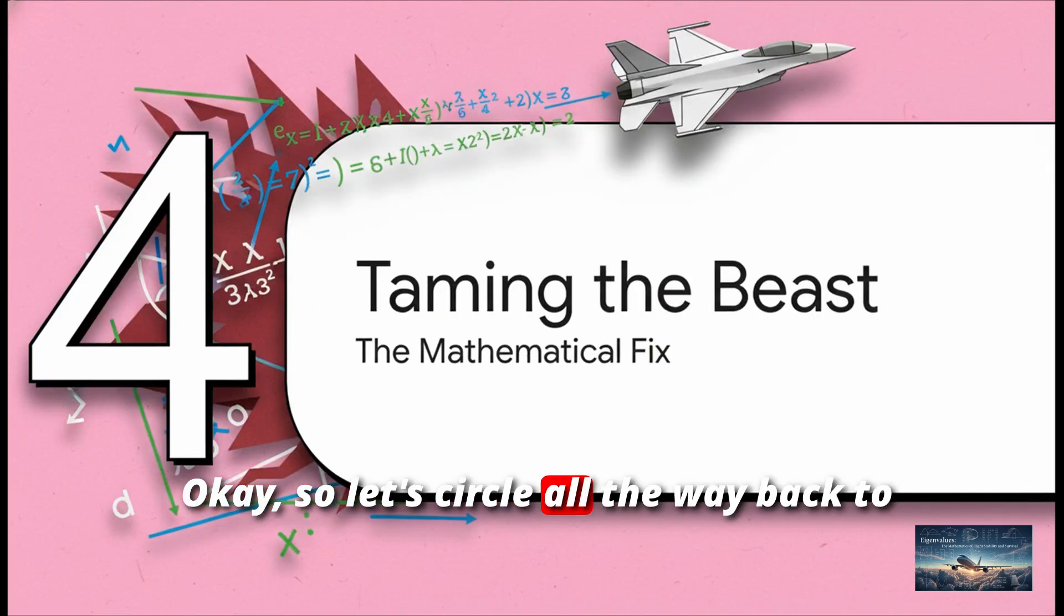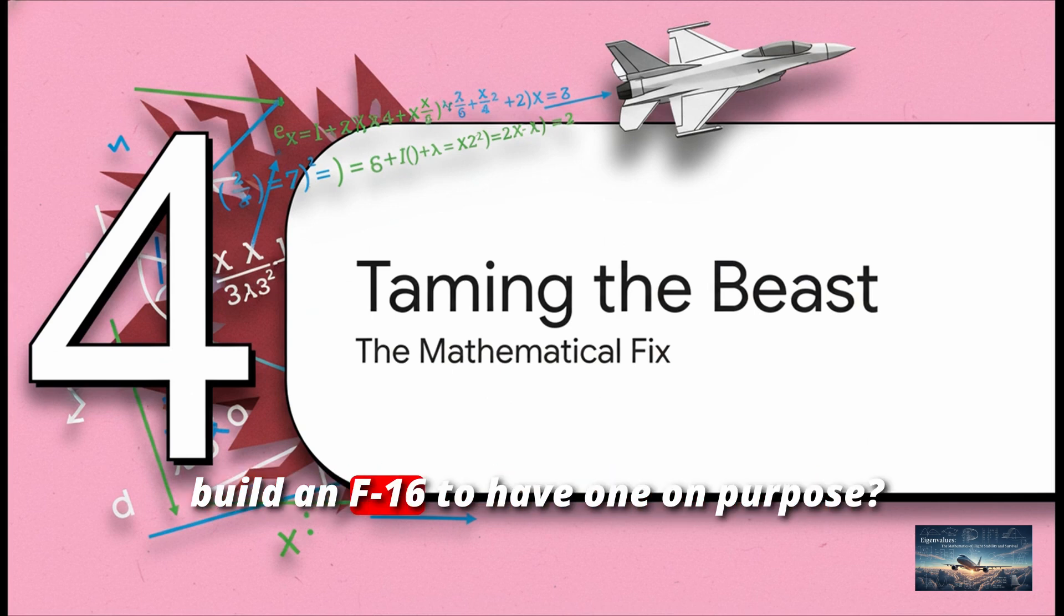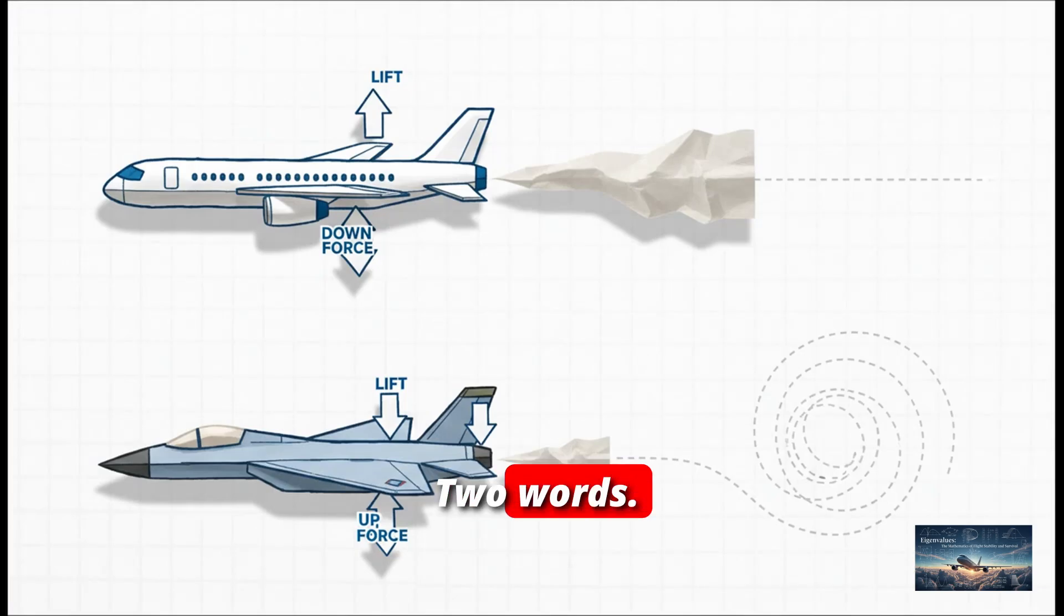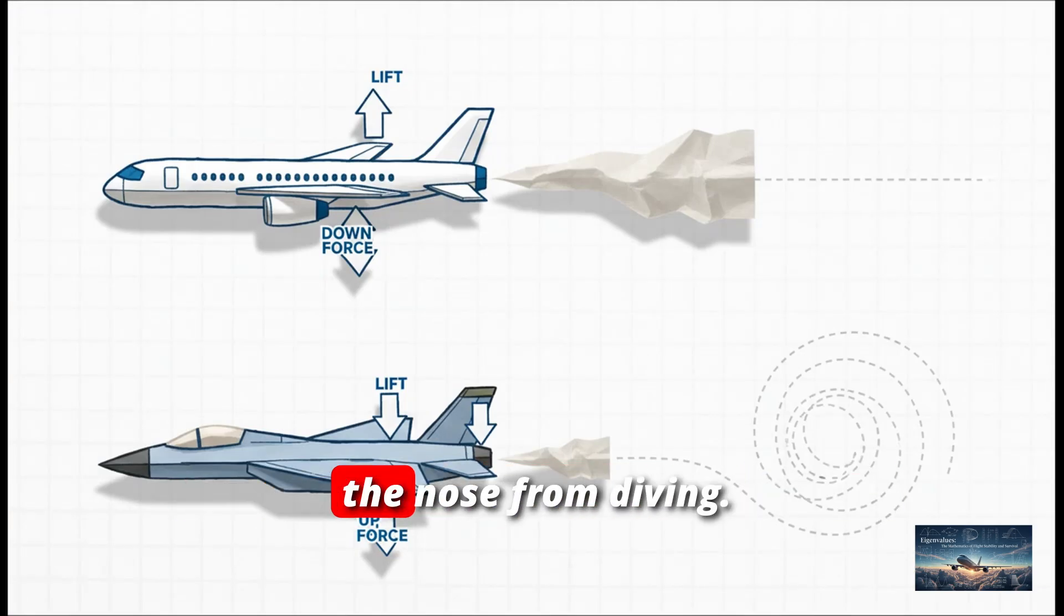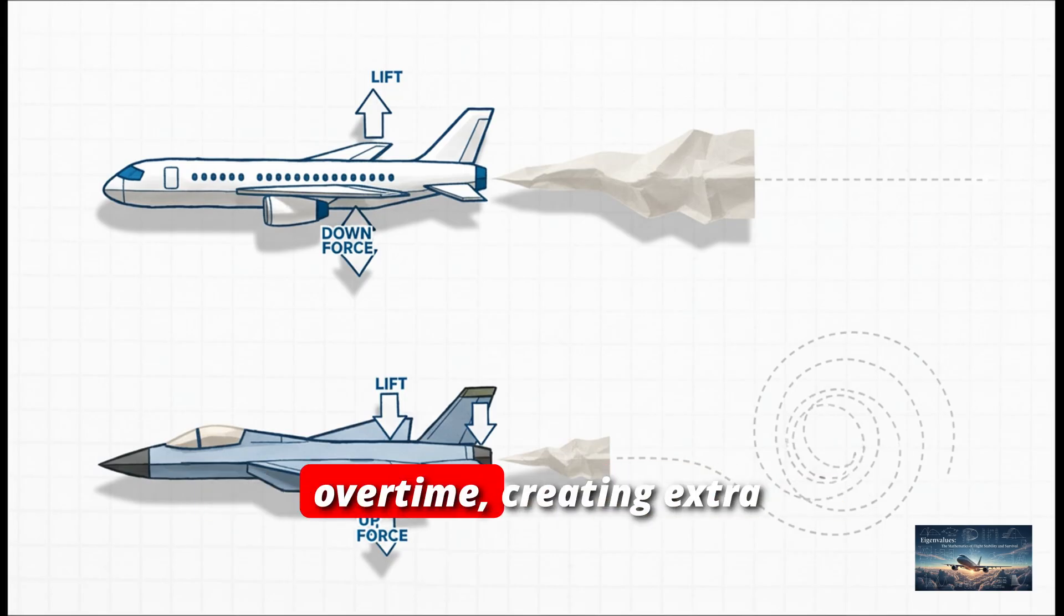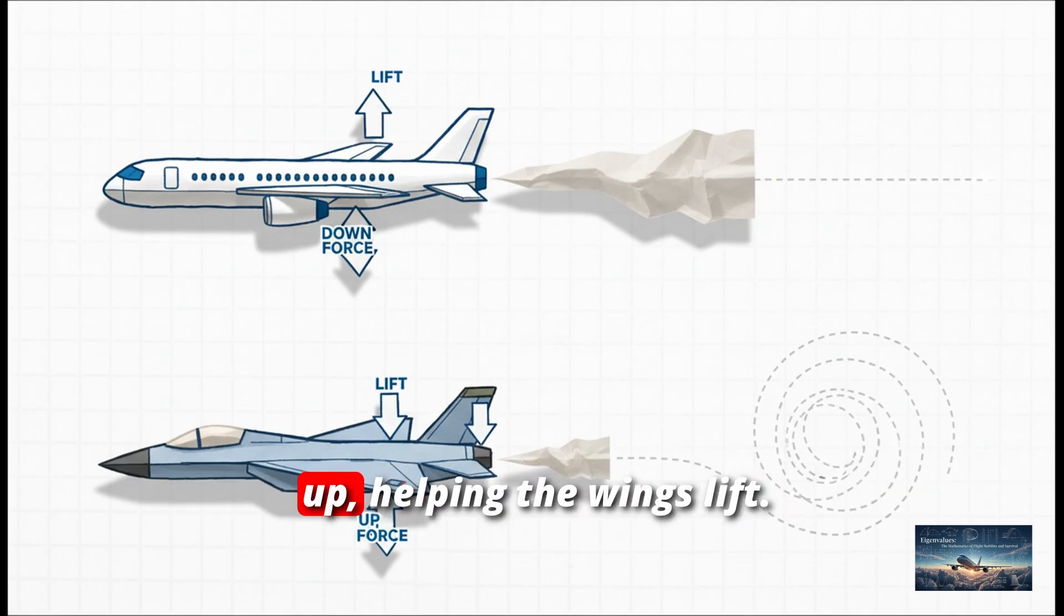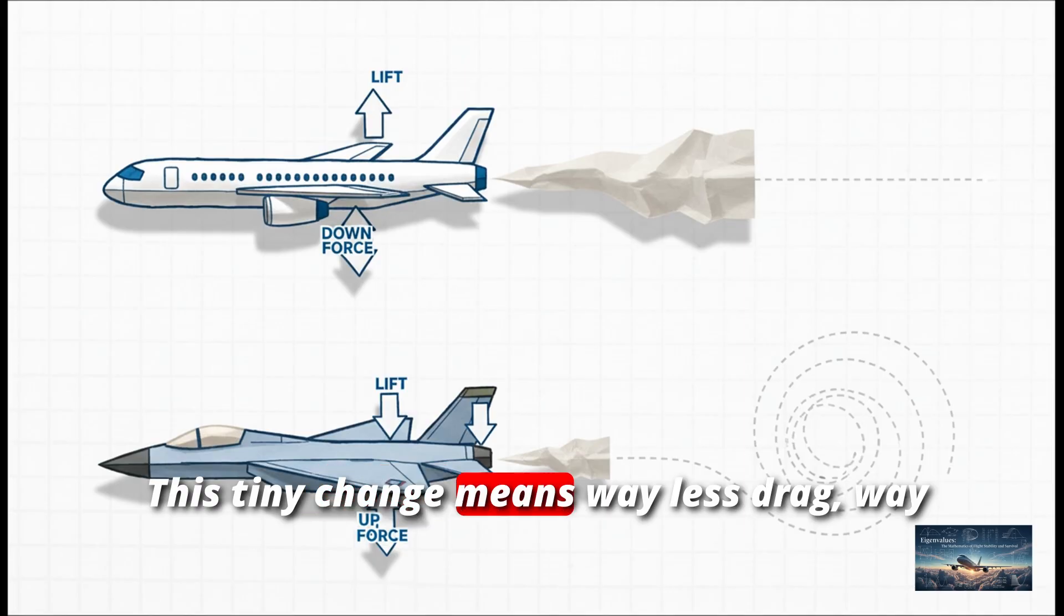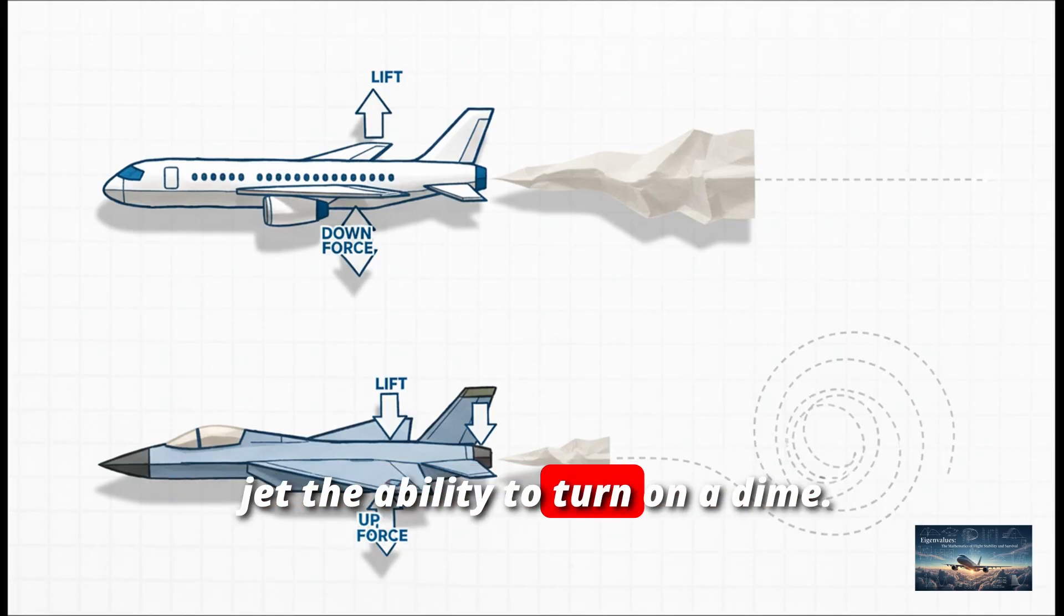Okay, so let's circle all the way back to our original mystery. If a positive eigenvalue is so ridiculously dangerous, why in the world would engineers build an F-16 to have one on purpose? Why would you build this unstable beast? Two words, performance. See, on a stable plane, the tail has to push down to keep the nose from diving. That means the wings have to work overtime, creating extra lift just to fight the tail. It's super inefficient. But on an unstable plane, the tail pushes up, helping the wings lift. This tiny change means way less drag, way better fuel efficiency, and for a fighter jet, the ability to turn on a dime.